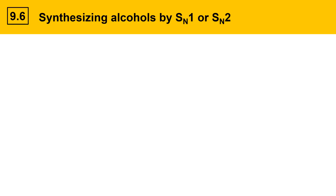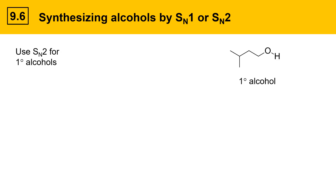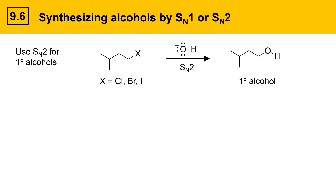Synthesizing alcohols can be done either through SN1 or SN2, depending on the substitution of the alcohol. The SN2 reaction is best for primary alcohols. For example, here's a primary alcohol. It could be synthesized from a primary alkyl halide, where X could be chloride, bromide, or iodide. The nucleophile for the SN2 reaction would be a strong one — hydroxide. Hydroxide can attack the primary alkyl halide, displace the leaving group, and give a primary alcohol. SN2 is a good choice for primary alcohols because they come from primary alkyl halides, and those are good substrates for SN2 reactions.